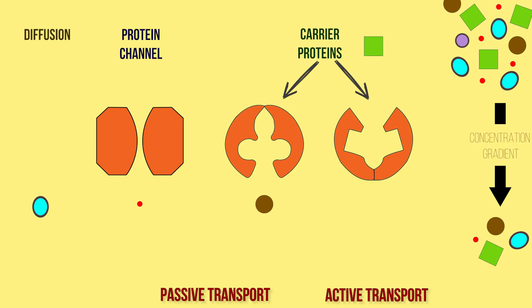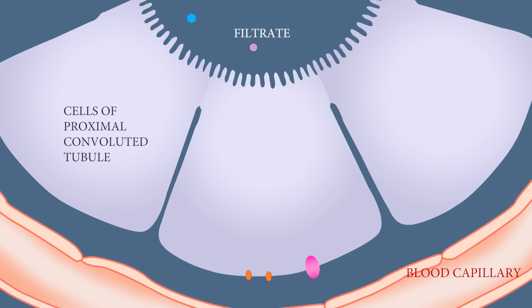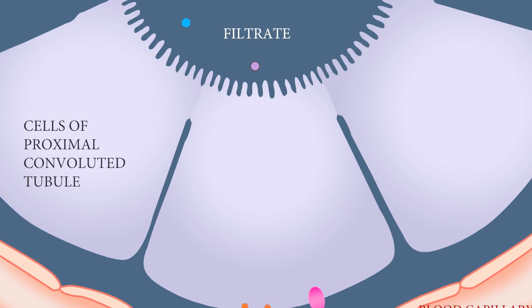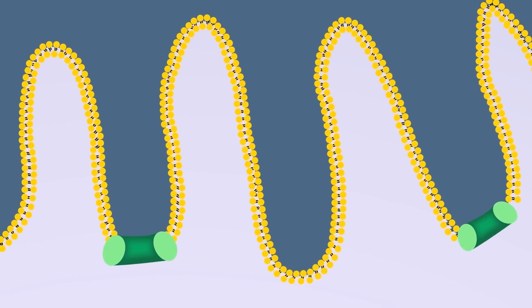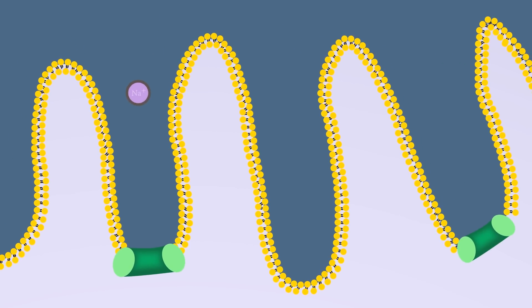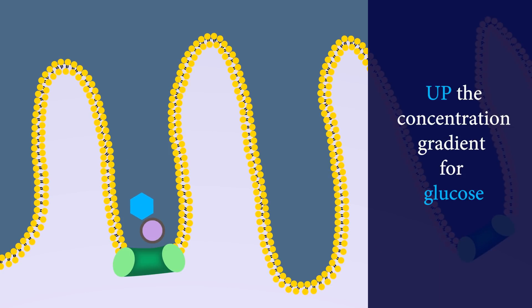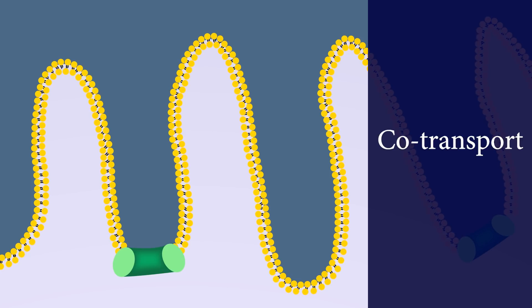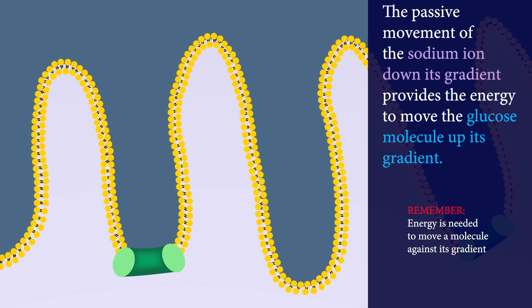There are several different varieties of these transporters, and each one transports something else at the same time as sodium ions. They can even do this against a concentration gradient. For example, a sodium ion diffusing through one kind of transporter might carry a glucose molecule with it up the concentration gradient for glucose.